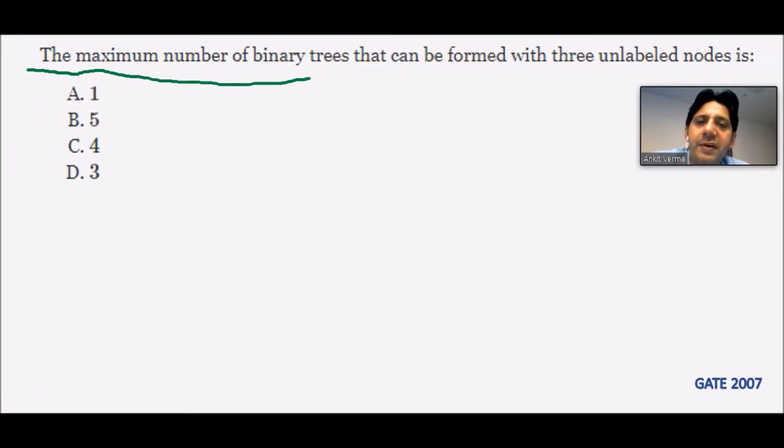The maximum number of binary trees that can be formed with three unlabeled nodes is... Well, we are aware that there is a direct formula for finding the maximum number of nodes of the tree, and that formula is 1/(n+1) * 2nCn.